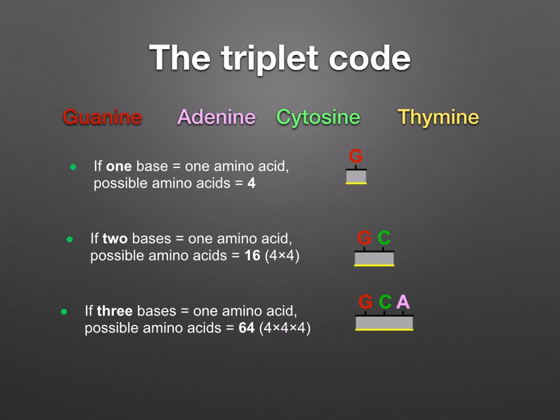So how did we work this out? You say 4 — because you've got four different bases — to the power of n, where n represents the number of bases in the code. So 64 is equal to 4 to the power of 3. This three-base code is called the triplet code. Although there are only four different bases in DNA, there are numerous combinations of these bases.